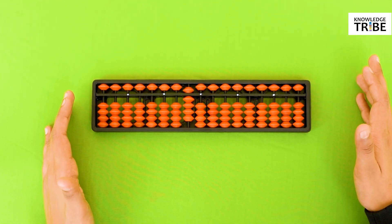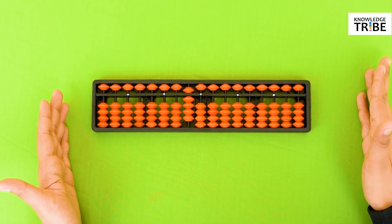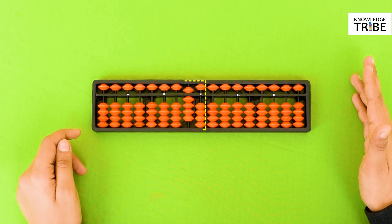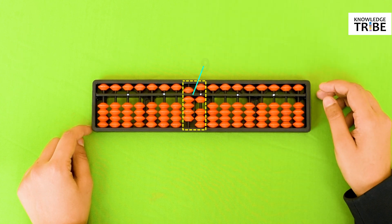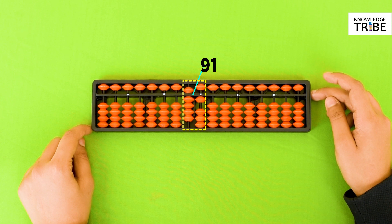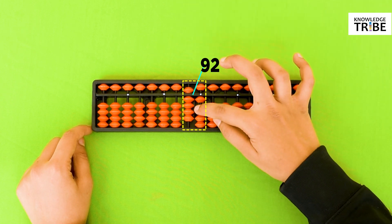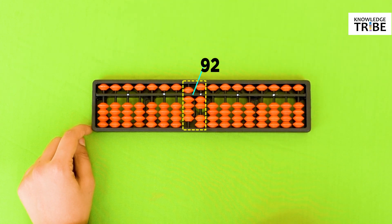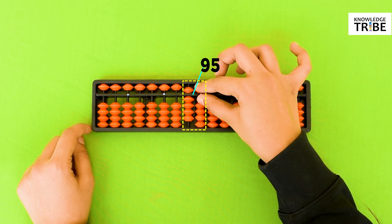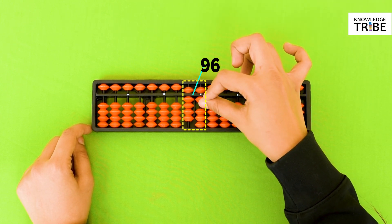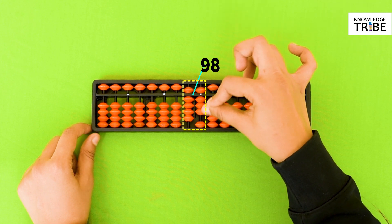Now let's look at how to count 91. So there is 9 in the 10's column. Add 1 bead in the 1's column. That counts 91. Now to count 92 move 1 bead from the 1's column towards the center beam. This is 92. We can count till 99 in the same manner. 93, 94, 95, 96, 97, 98 and 99.